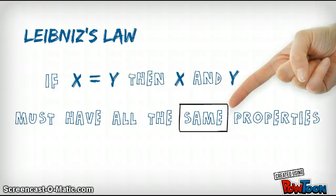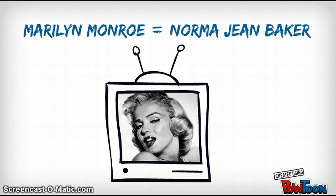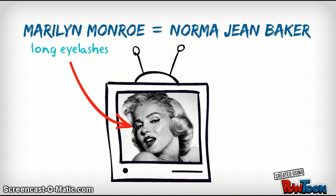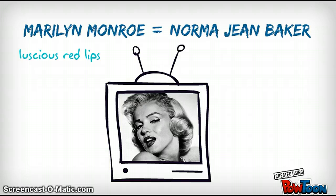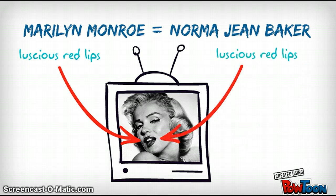To illustrate, let's take an example. As many people know, Marilyn Monroe's real name was Norma Jean Baker. That is, the names Marilyn Monroe and Norma Jean Baker refer to the very same person. Thus, by Leibniz's law, if Marilyn Monroe has long eyelashes, then Norma Jean Baker has long eyelashes. And if Marilyn Monroe has luscious red lips, then Norma Jean Baker has luscious red lips.